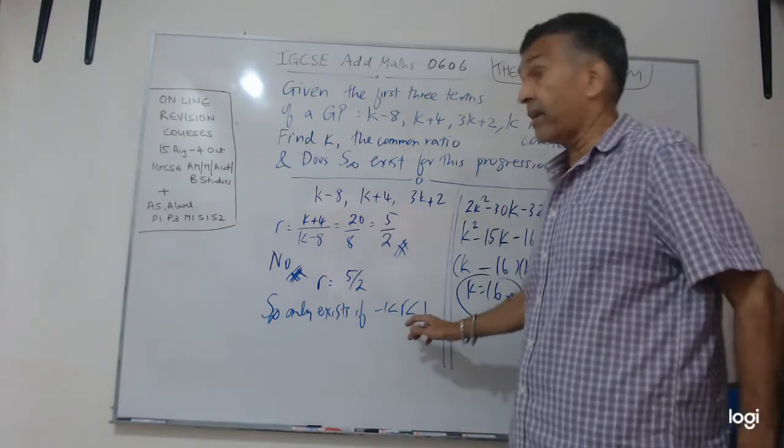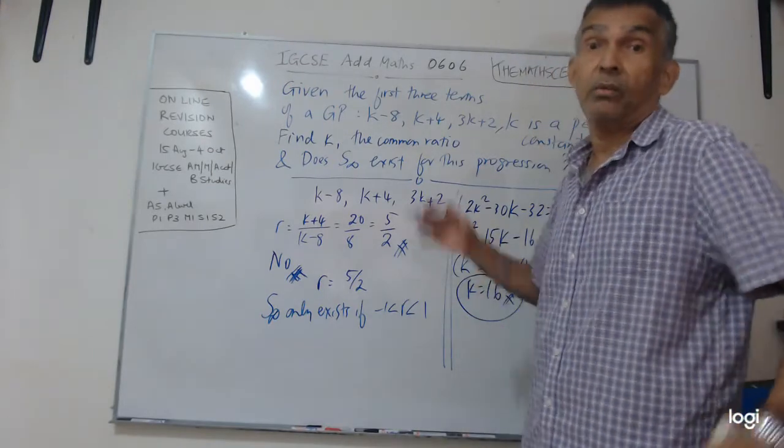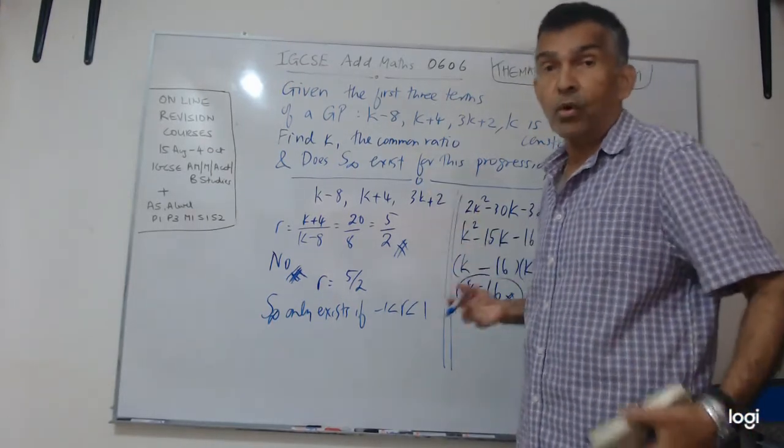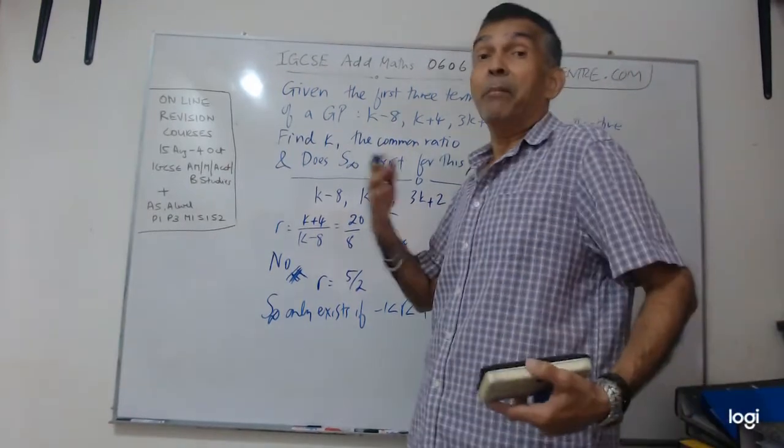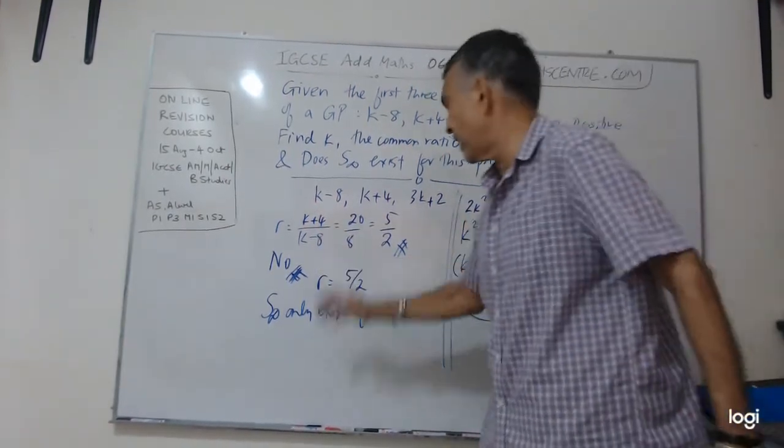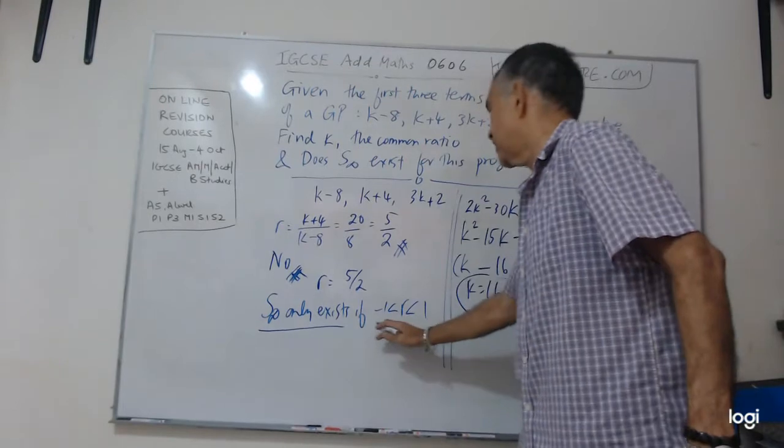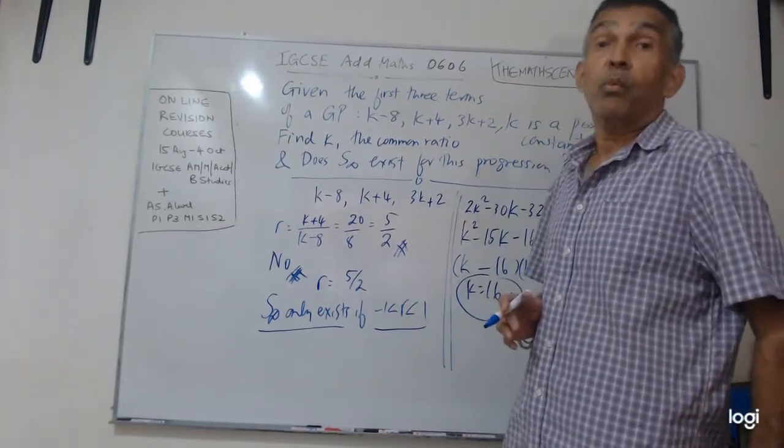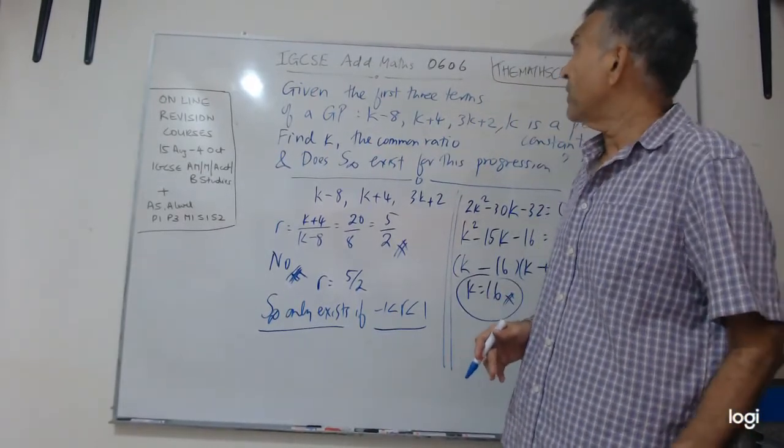And make sure in your exam, write this down. Don't just say no or yes or whatever and leave it. When you say no or yes to some question, make sure that you write down why. So why? Because S infinity only exists if R is between 1 and negative 1. And we are done with this problem. I think it's a pretty good question.